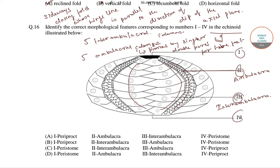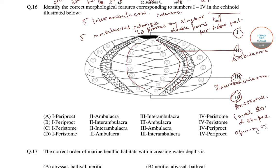These echinoids have 2 openings. The first one is periproct and the next one is peristome. The peristome is the oval to D-shaped opening on the lower surface where the mouth is situated. So number 4 is the peristome.